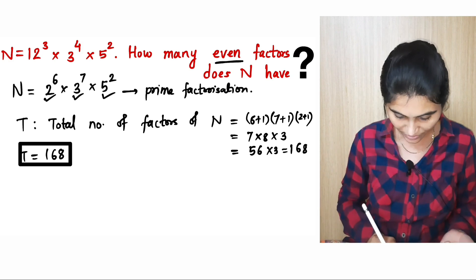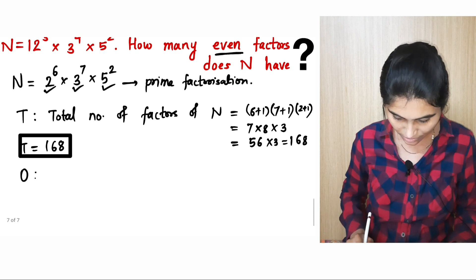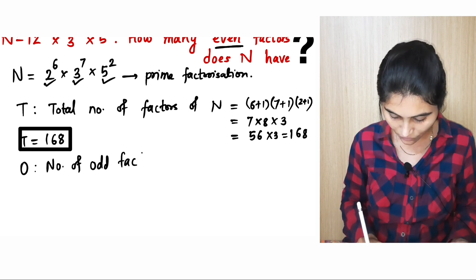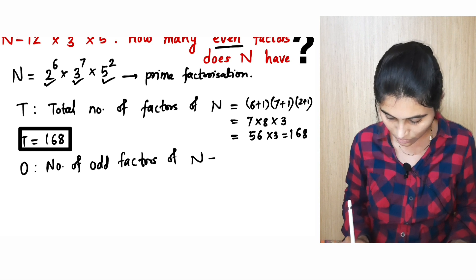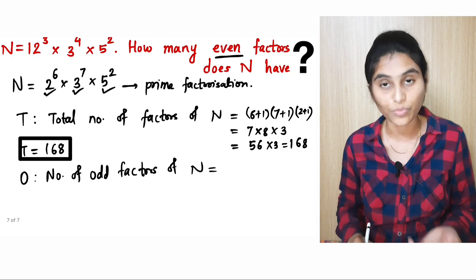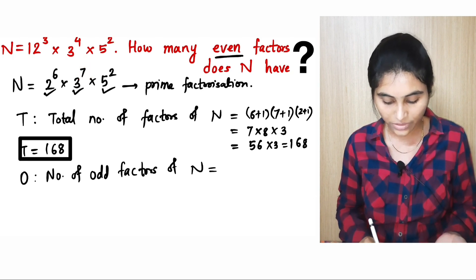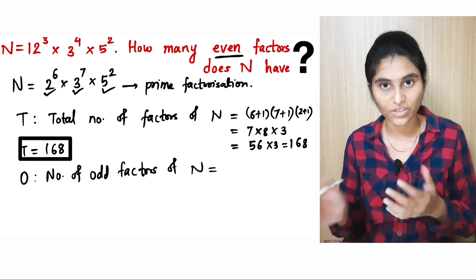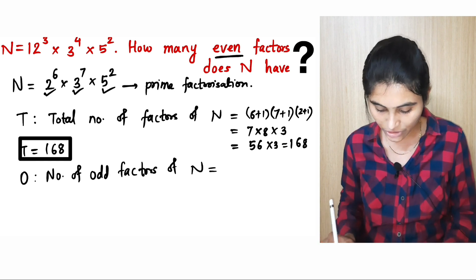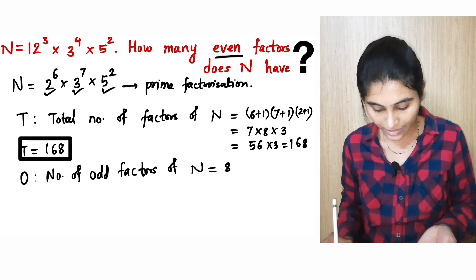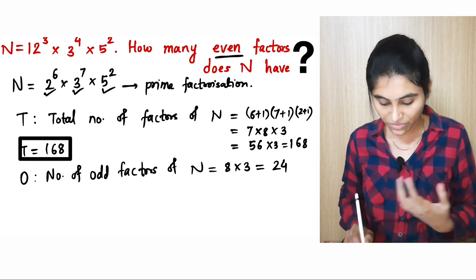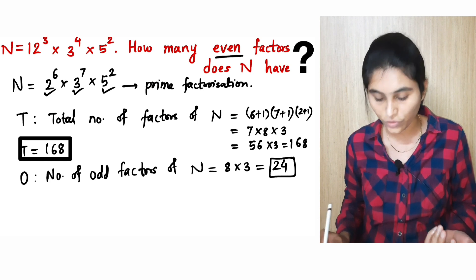Let us find the odd number of factors — that means combinations of powers of 3 and 5 only. Let o denote the number of odd factors of n. Just as before, add 1 to each power and take the multiplication. The power of 3 is 7, so add 1 to get 8; the power of 5 is 2, so add 1 to get 3. So o equals 8 times 3, which is equal to 24. That means n has 24 odd factors.